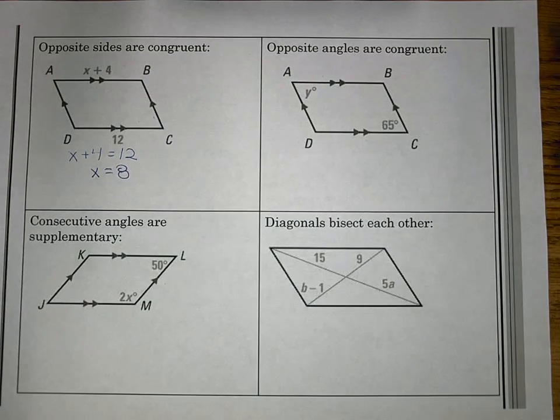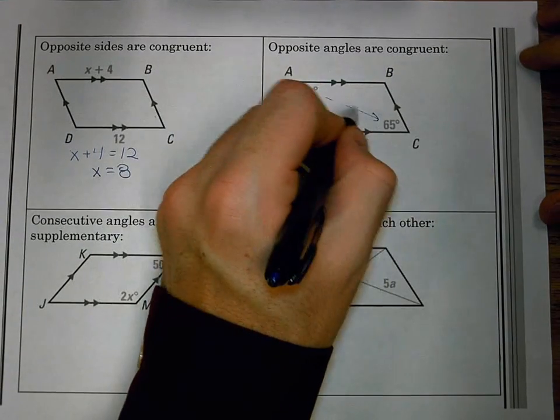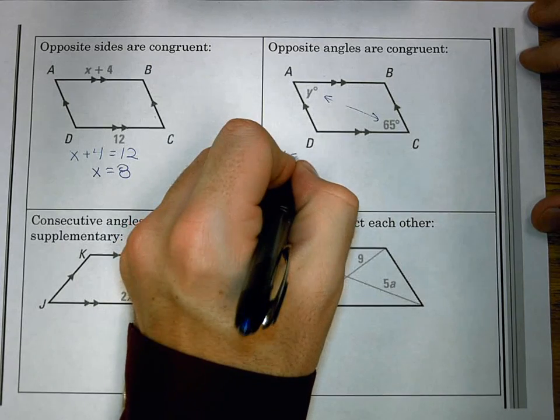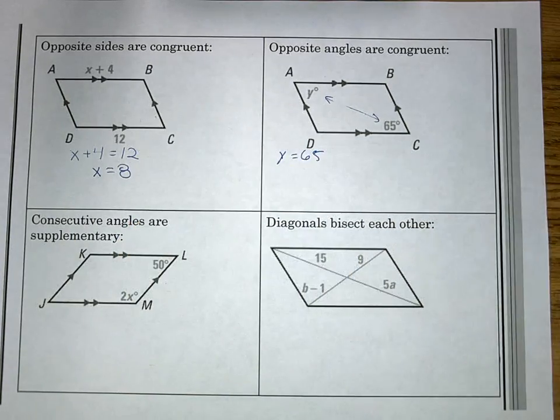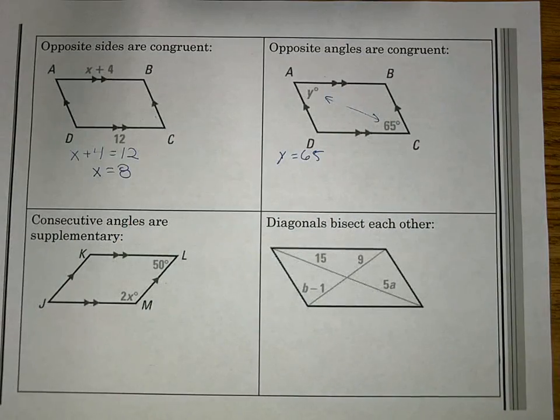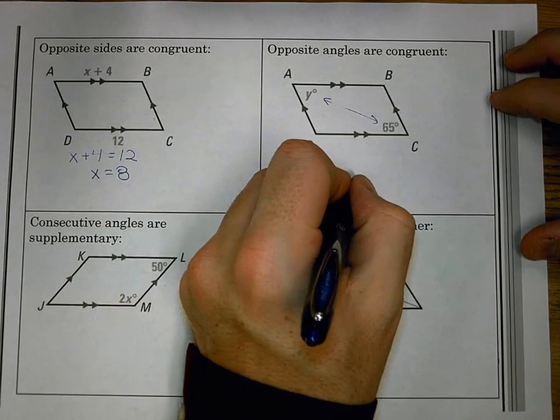For opposite angles are congruent, I know that Y and 65 are opposite of each other, so they're equal, so Y is 65. But let's go a little bit further on this one because the angles offer a little more opportunity. If Y is 65, I know both of those are 65. That means those two angles together take up 130 degrees.